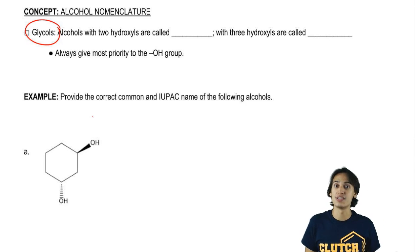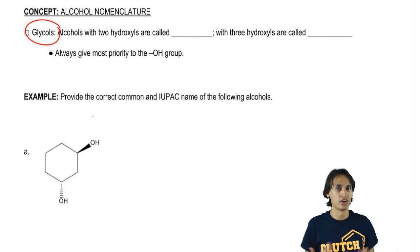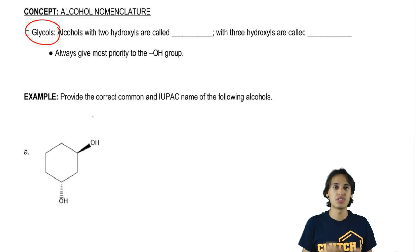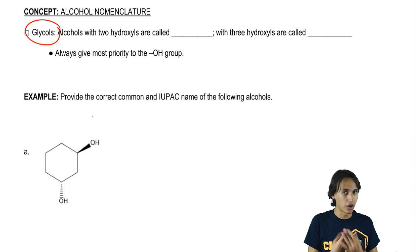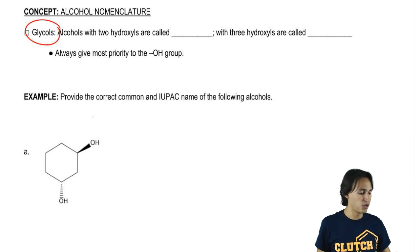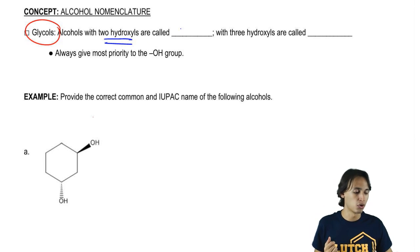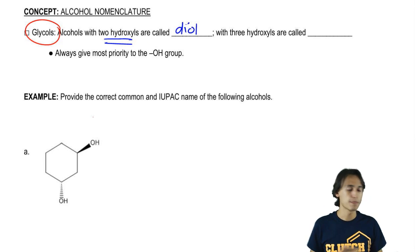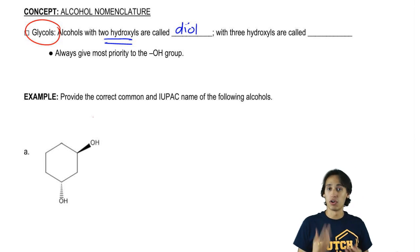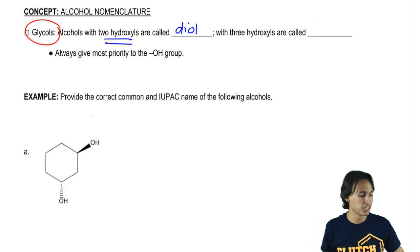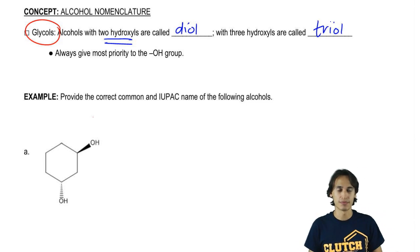We're going to use prefixes to indicate exactly how many OHs are on that chain — the same prefixes we use for all IUPAC nomenclature. If you have an alcohol with two hydroxyls, that's going to be called a diol. If you have an alcohol with three hydroxyls, that's going to be called a triol, and that keeps going to tetra, et cetera.